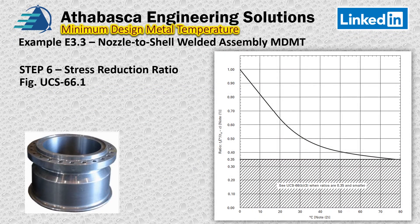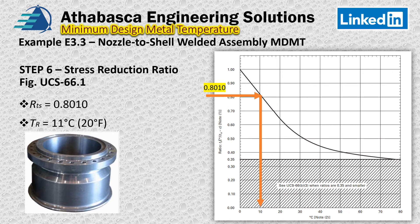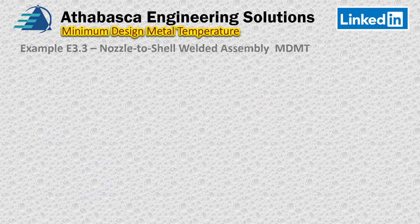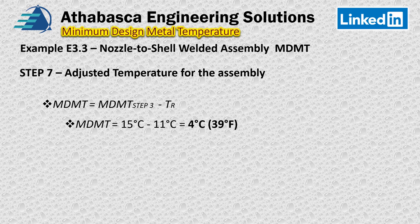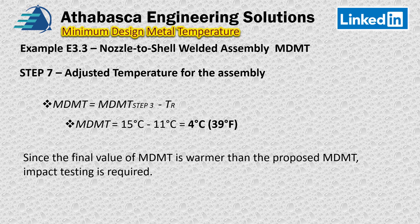Moving to the stress reduction ratio chart, UCS-66.1 for steel. Using a stress reduction ratio of 0.8, we drop it on the chart, go across until we touch our curve, and find that the temperature reduction is 11 degrees centigrade, or about 20 degrees Fahrenheit. Putting it all together in step seven — adjust the temperature for the assembly — we take the original chart MDMT and apply the temperature reduction, ending up at 4 degrees centigrade. Since this value is warmer than the proposed MDMT, impact testing is required.